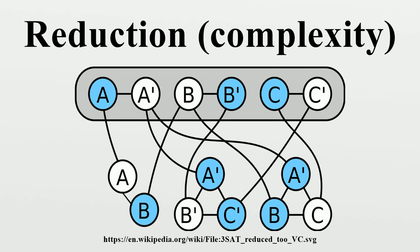A very simple example of a reduction is from multiplication to squaring. Suppose all we know how to do is add, subtract, take squares, and divide by 2. We can use this knowledge, combined with the following formula, to obtain the product of any two numbers. We also have a reduction in the other direction.